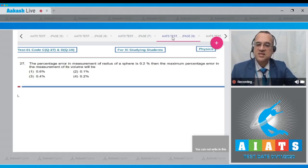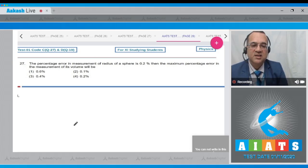The question says the percentage error in the measurement of radius of the sphere is 0.2 percent. Then the maximum percentage error in the measurement of its volume will be - these are the four options. Now, error in radius delta r by r into 100 is given equal to 0.2 percent.